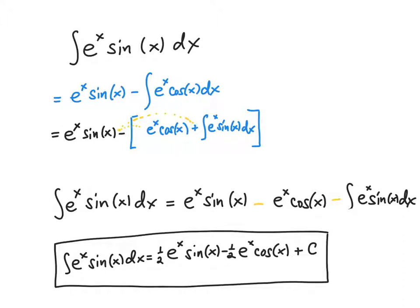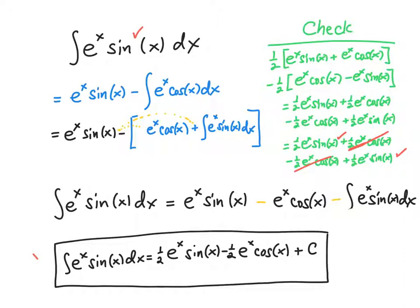And you can check your work — we can check our answer by differentiating. So the one-half e to the x sine x: I'll differentiate that up here using the product rule. The derivative of e to the x is e to the x, sine x left alone, plus the derivative of sine of x is cosine x. And then you differentiate the minus one-half e to the x cosine x. You get e to the x cosine x, plus e to the x — and then the derivative of cosine x is minus sine x, so you get a minus sign there. Then you distribute the one-half into the top and the minus one-half into the bottom part, so that flips the signs. The cosines cancel, and one-half e to the x sine x plus one-half e to the x sine x is e to the x sine x, and we get the integrand back again. So that works.